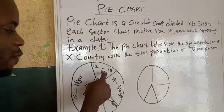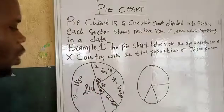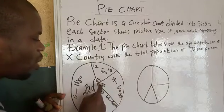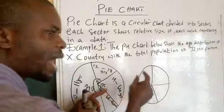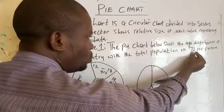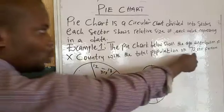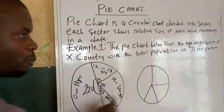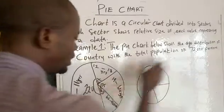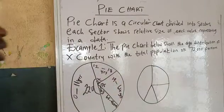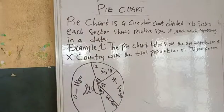We have four sectors. When we have these sectors, each sector has its own proportion of the 72 persons. The first one represents some portion of the 72 persons, the second also represents some proportion, and the third also represents some proportion. That is what we mean by pie charts.